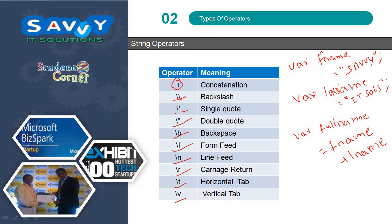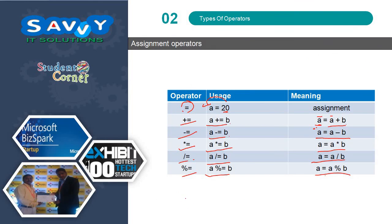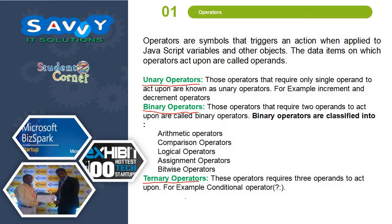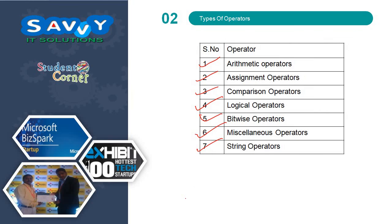I hope you understand JavaScript Operators. In this video we discussed what an Operator is and the types of Operators: Arithmetic, Assignment, Comparison, Logical, Bitwise, Miscellaneous, and String Operators. In the next video we will learn practically how to implement these. Thank you.